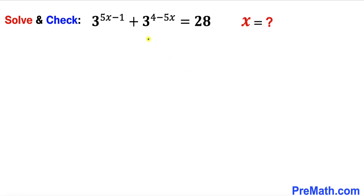Welcome to pre-math. In this video we are going to solve the exponential equation 3^(5x−1) + 3^(4−5x) = 228, and eventually we are going to check our solutions as well.